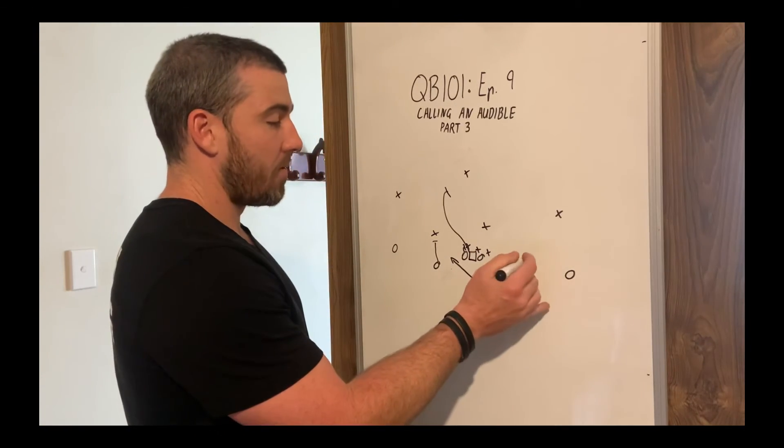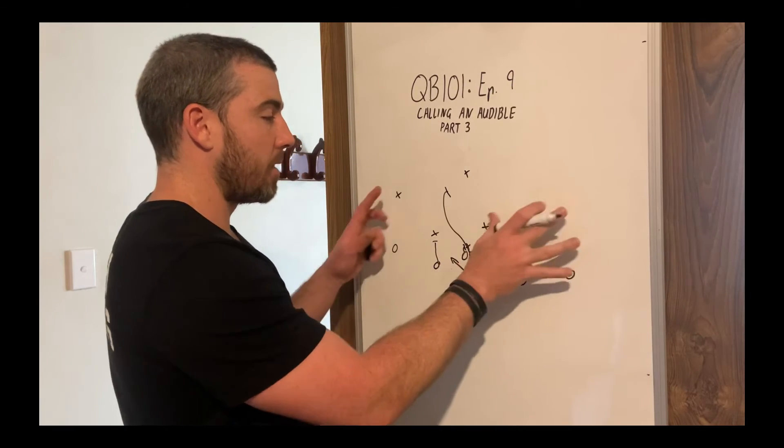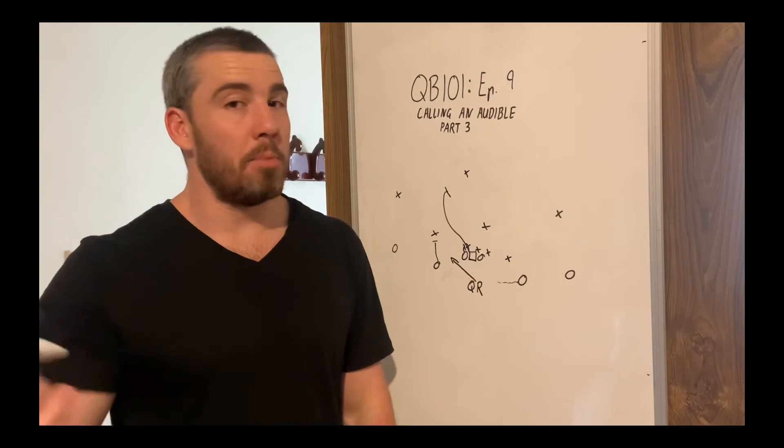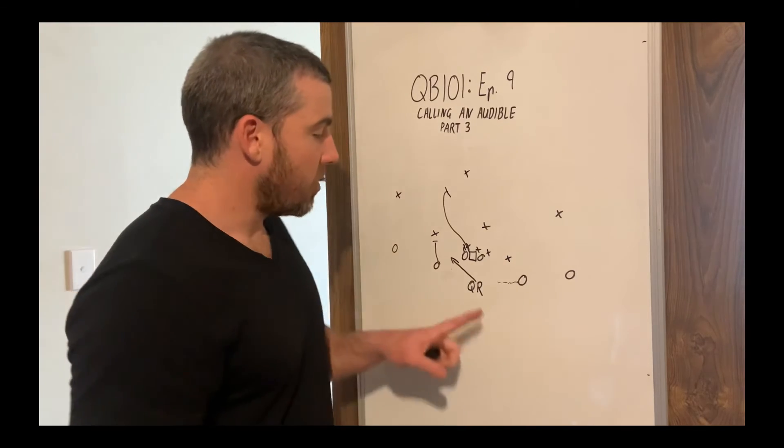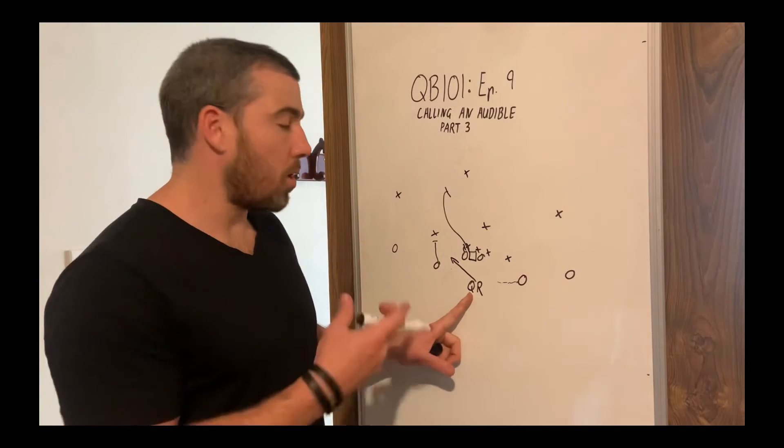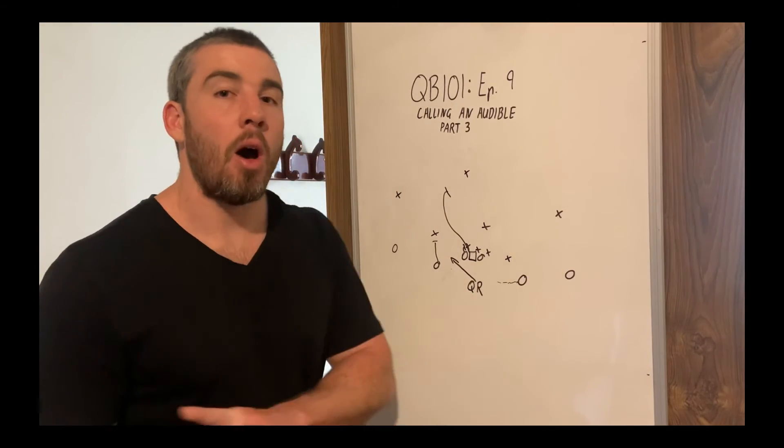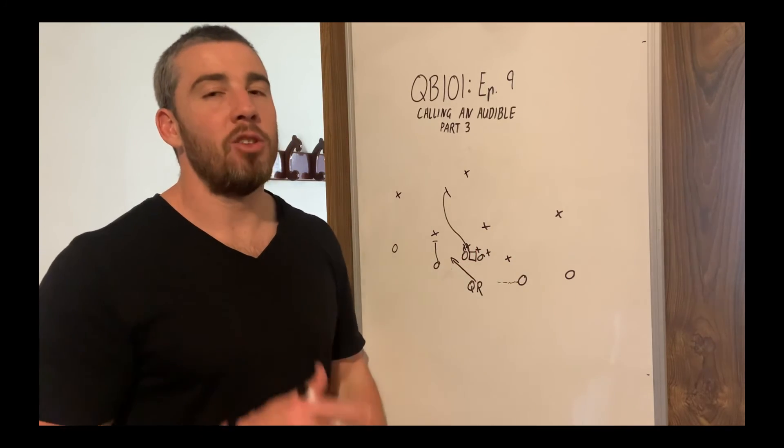So anytime that you have the problem of there's an overload on one side, you might be thinking of throwing cross or something like that, and you're thinking, if they blitz, they're going to absolutely crush me right now. Check to a toss or a stretch away from the pressure and you'll be good to go.